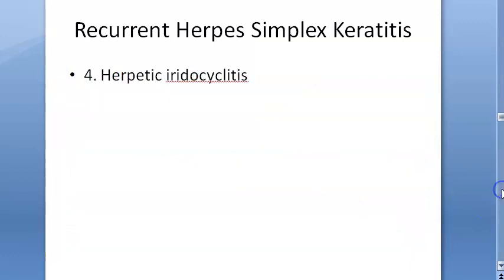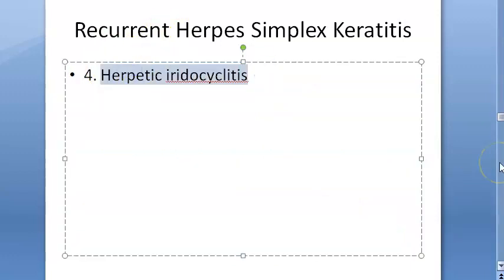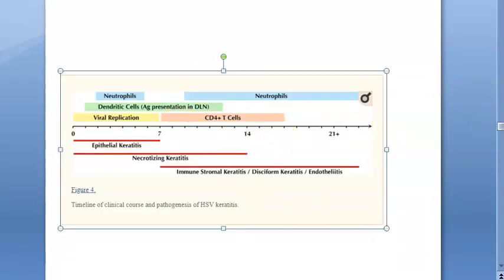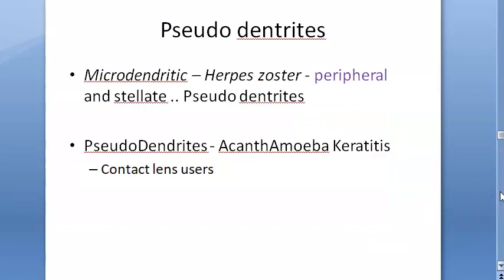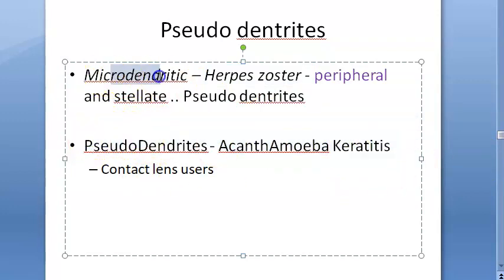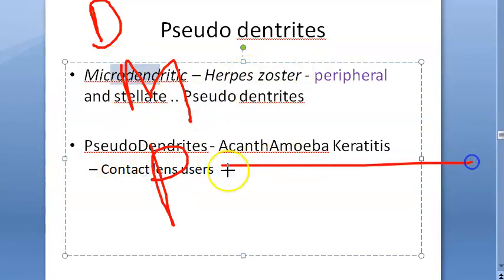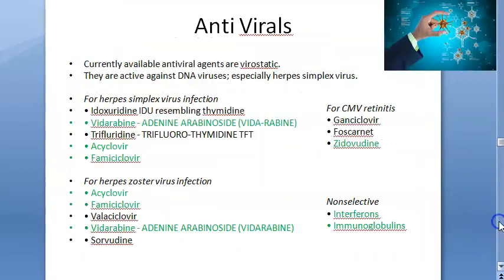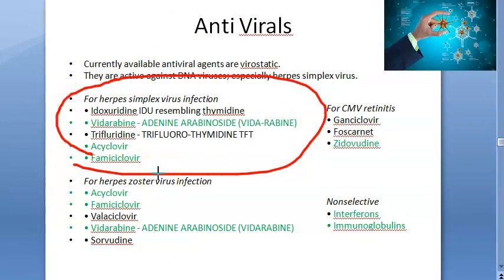The fourth part of recurrent herpes simplex keratitis is herpetic iridocyclitis, involving the iris and ciliary body. Distinguish: dendritic ulcer in herpes simplex; micro-dendritic in herpes zoster; pseudodendrites in acanthamoeba keratitis. Antiviral drugs for herpes simplex: idoxuridine, vidarabine, trifluorothymidine (TFT), acyclovir, famciclovir, valacyclovir. For CMV retinitis (usually in HIV): cidofovir. Non-selective antivirals: interferons and immunoglobulins.